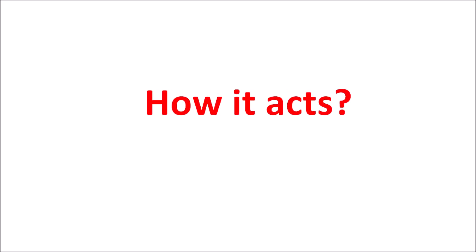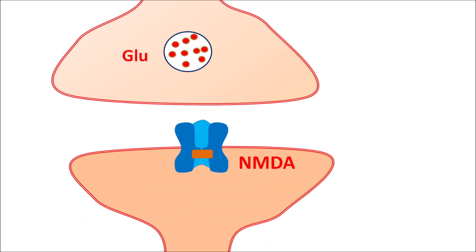Within the CNS, glutamate plays an important role in producing CNS excitation. The presynaptic neurons store glutamate, and the postsynaptic neuron is equipped with glutamate receptors such as NMDA receptors. It can also contain AMPA receptors, which produce fast synaptic excitation. The NMDA receptor is an ionotropic receptor that allows sodium ions as well as calcium ions through the same ion channel.